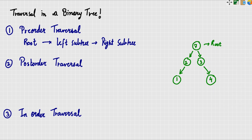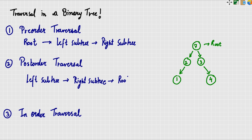Now I will talk about post-order traversal. In post-order traversal: first the left sub-tree, then the right sub-tree, then the root. So the order is left sub-tree, right sub-tree, then root.